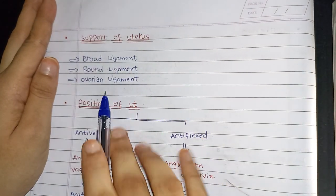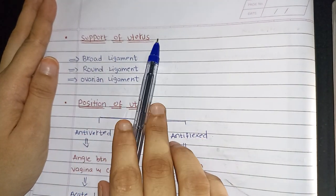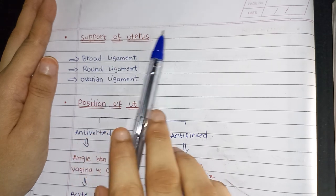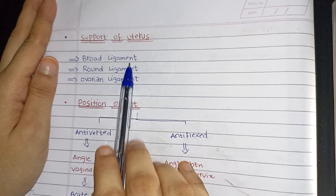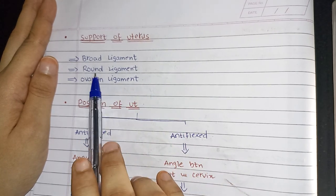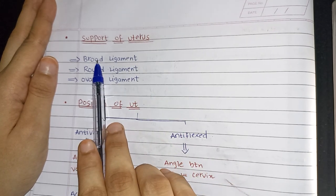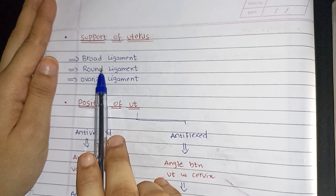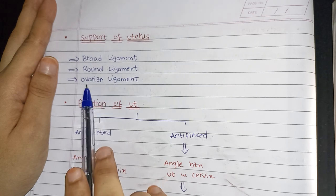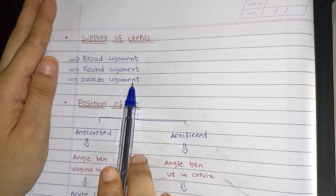Now coming to the uterus supports. The uterus is supported by three types of ligaments: the broad ligament, the round ligament, and the ovarian ligament.